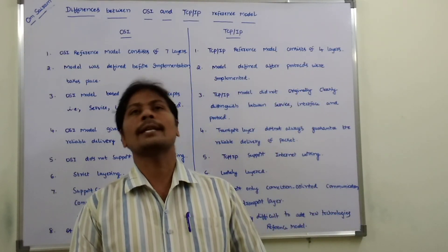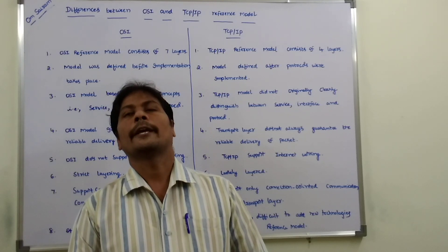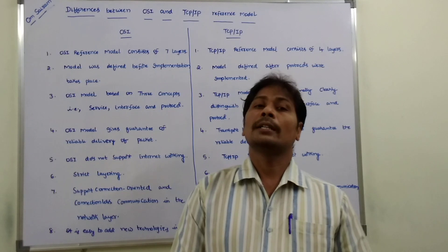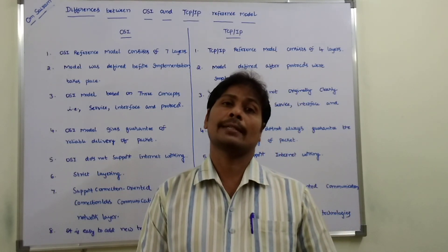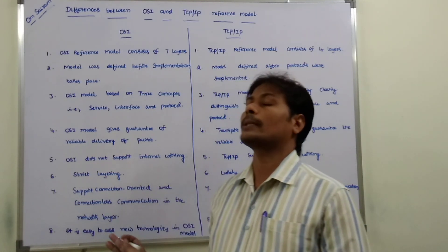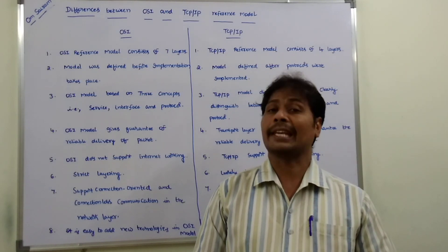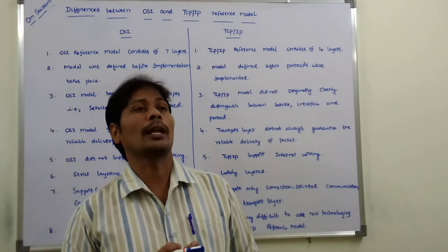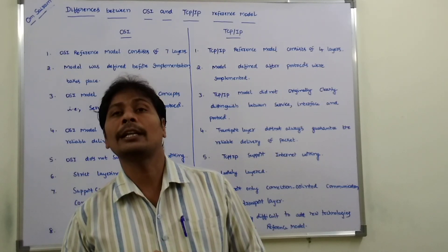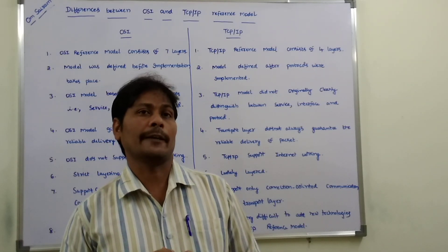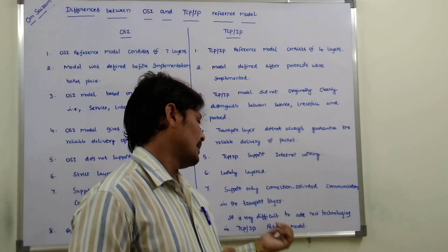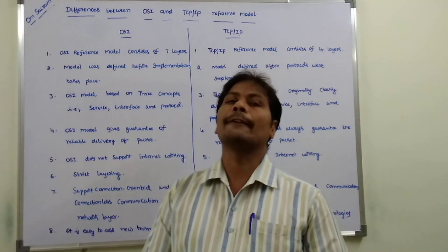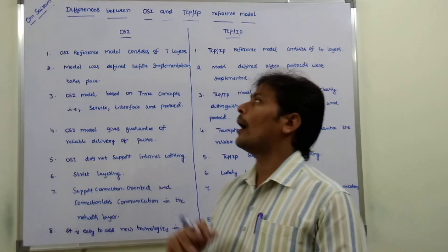The eighth difference: it is easy to add new technologies in the OSI reference model. If any new technology is developed, it can easily be added to the OSI reference model. But in the case of the TCP/IP reference model, it is very difficult to add new technologies when any new development occurs.